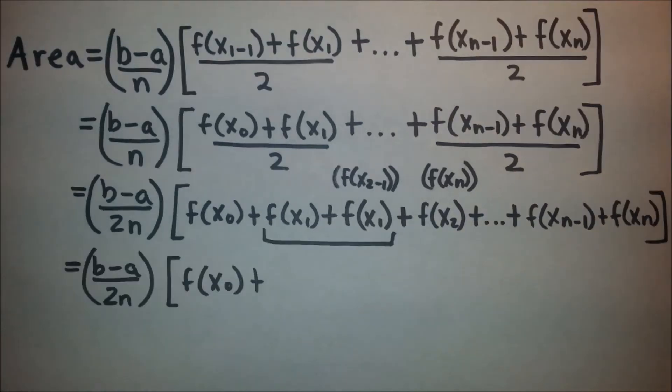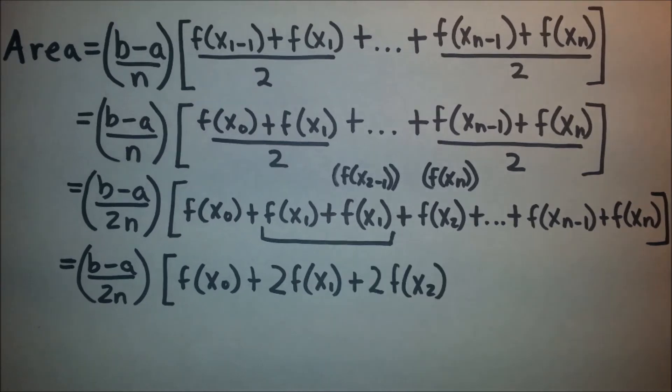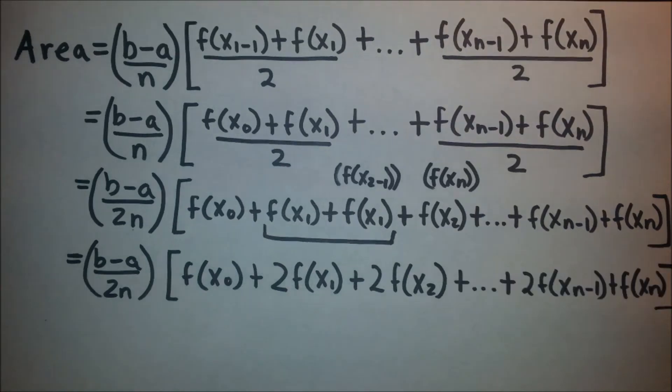We are able to combine those two f(x₁)s, giving us, once we bring everything down, 2f(x₁). Then, continuing the formula, we would wind up with 2f(x₂) as well. Then we bring down the rest without forgetting to put the two in front, giving us 2f(x_{n-1}) + f(xₙ).